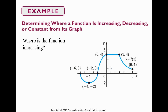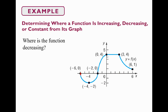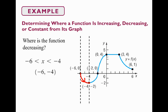Determine whether a function is increasing, decreasing, or constant from its graph. Where is the function increasing? From negative 4 to 0 — the function is going uphill, increasing from negative 4 to 0, but not including negative 4, because at negative 4 it's just constant, and at 0 it's not doing anything. Between those values, as you can see in red, it's going uphill. In interval notation, that's expressed as open parenthesis negative 4 comma 0 close parenthesis — parentheses, not brackets, because at the endpoints the function isn't increasing. Where is it decreasing? Between negative 6 and negative 4, not including negative 6 and negative 4, expressed as open interval notation.